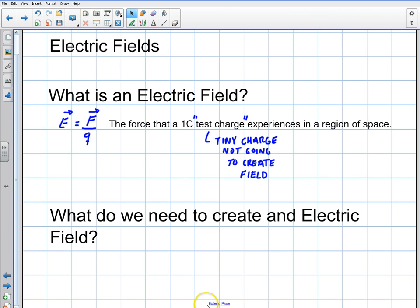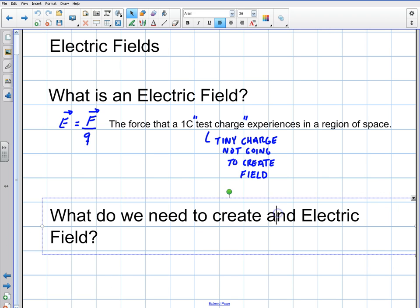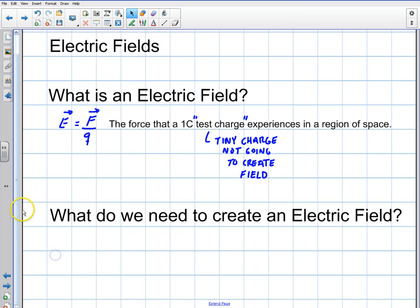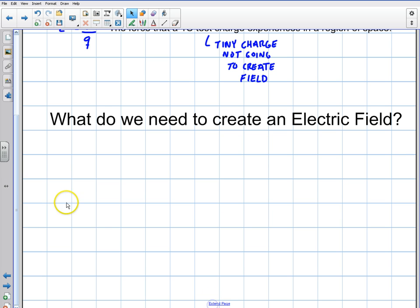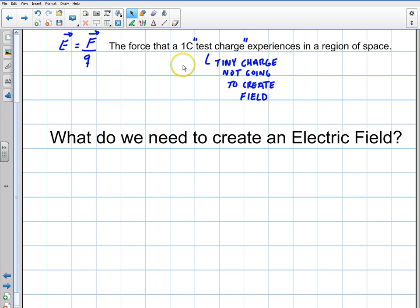So the next question here is what do we need to create an electric field? That should say N. What do we need to create an electric field? How do we do that? Well, the basic idea is that to create an electric field, we basically need one charge. We need one charge.